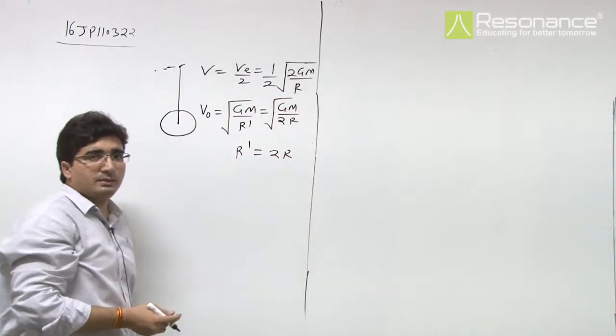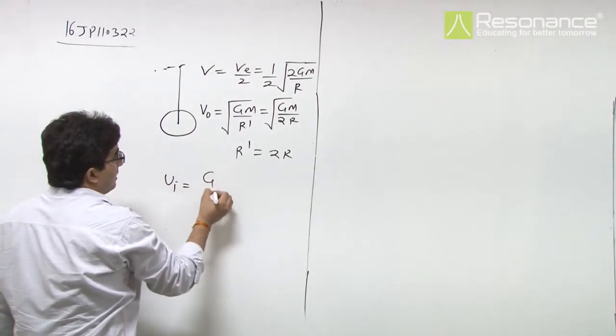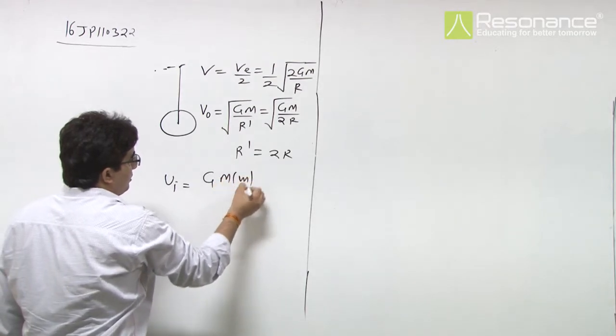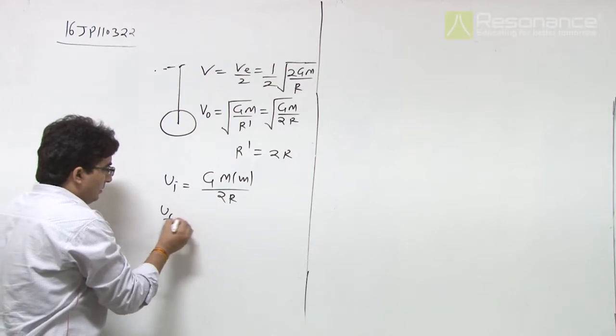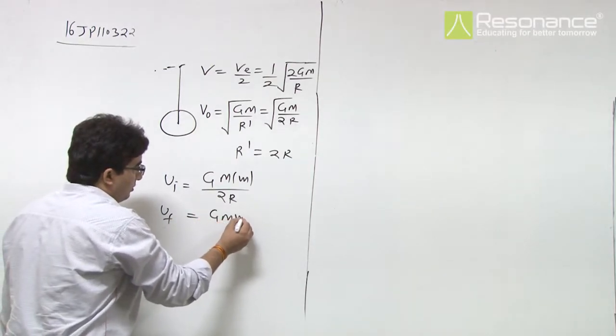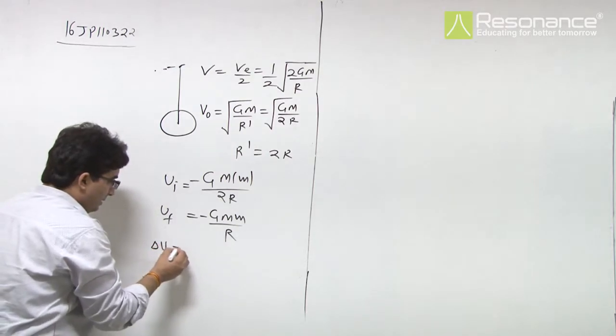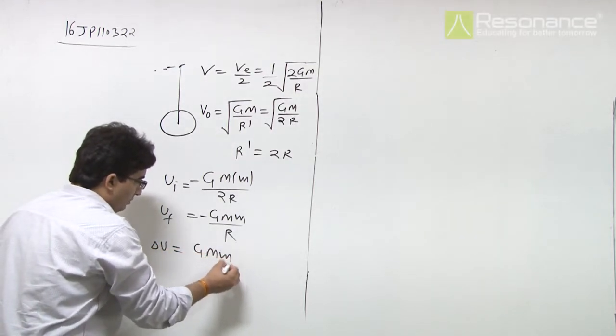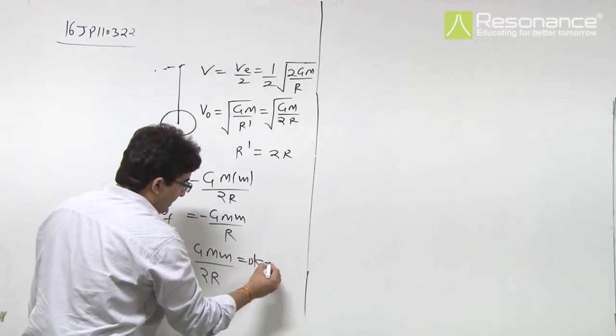When we write the energy: U_initial will be -GMm/(2r) = -GMm/r_s, and U_final will be -GMm/r. The change in potential energy ΔU equals the change in kinetic energy ΔK.